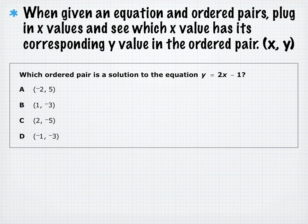When given an equation and ordered pairs, plug in X values and see which X value has the corresponding Y value in the ordered pair. Remember, an ordered pair is in parentheses and gives you an X and Y value separated by a comma — X value comes first, then your Y value.